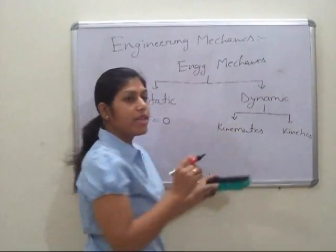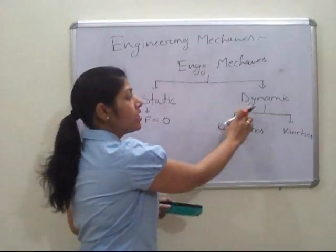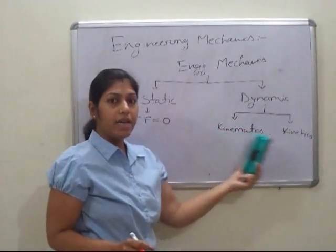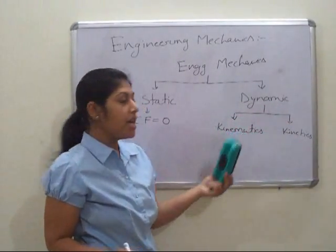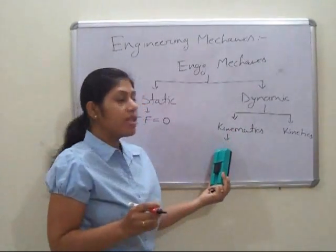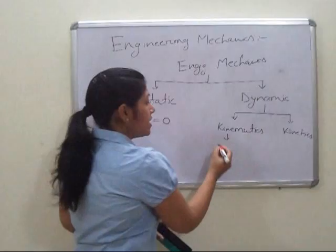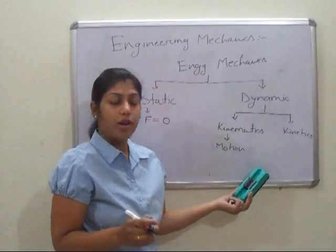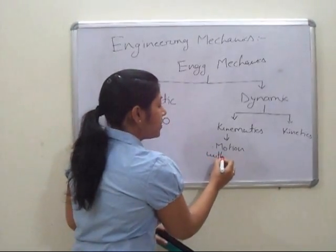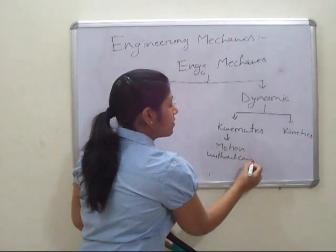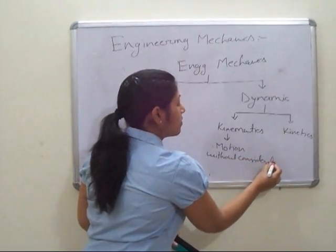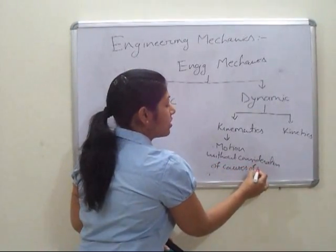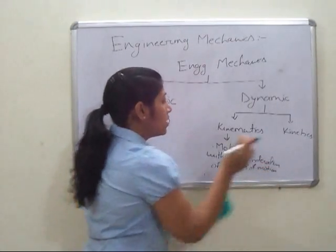Dynamic is when the body is in movement — when the body is in motion, that condition is the Dynamic condition. If we subdivide Dynamic into two parts — Kinematics and Kinetics — Kinematics is basically when the body is in motion and we are considering the motion of the body without consideration of the causes of motion. That is called Kinematics.